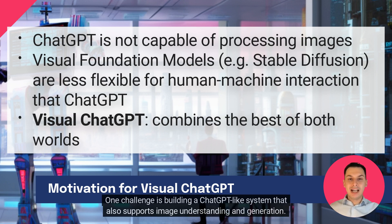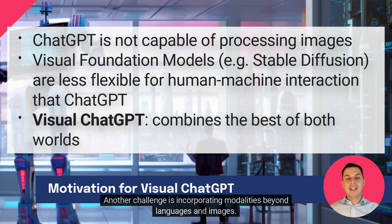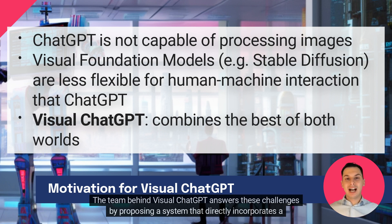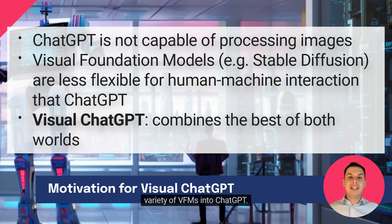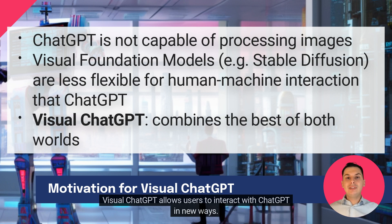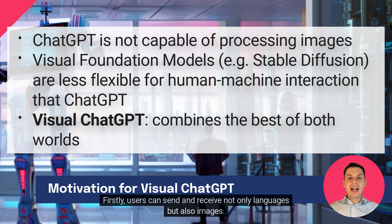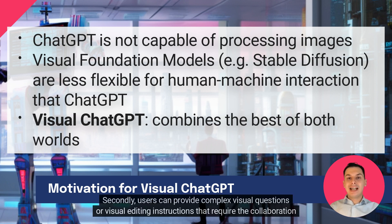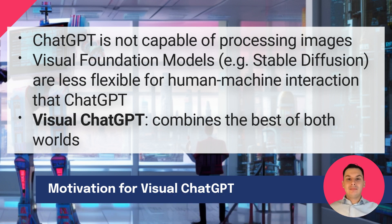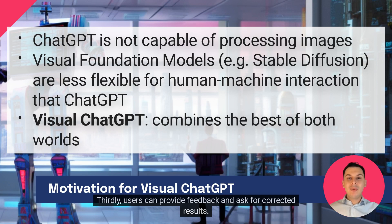One challenge is building a ChatGPT-like system that also supports image understanding and generation. Another challenge is incorporating modalities beyond languages and images. The team behind Visual ChatGPT answers these challenges by proposing a system that directly incorporates a variety of VFMs into ChatGPT. Visual ChatGPT allows users to interact with ChatGPT in new ways. Firstly, users can send and receive not only languages but also images. Secondly, users can provide complex visual questions or visual editing instructions that require the collaboration of multiple AI models with multiple steps. Thirdly, users can provide feedback and ask for corrected results.